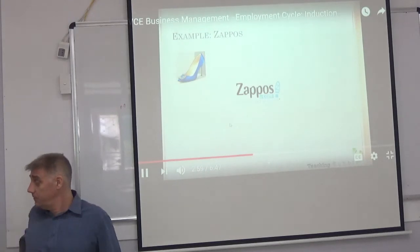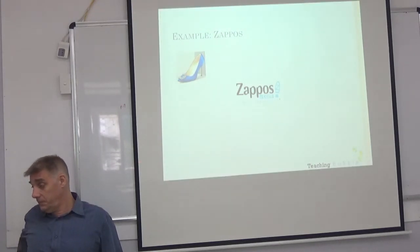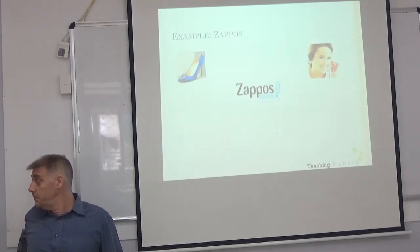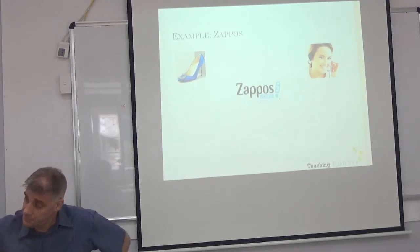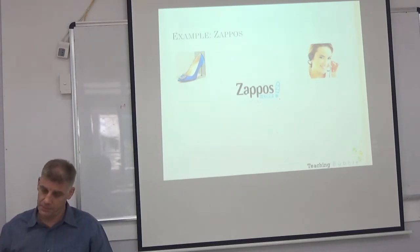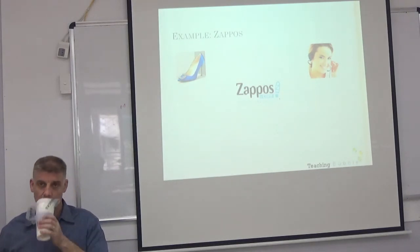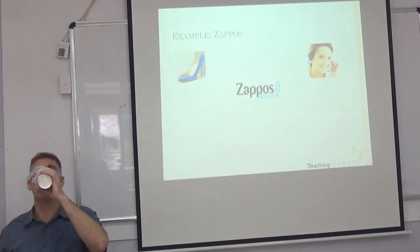First of all, Zappos sells shoes — they initially started just by selling shoes online, so they're an online business. Their main focus, as you can see at the bottom, is customer service — powered by service — which can be quite difficult with an online business. They don't have stores where they can interact with staff, so they rely heavily on a call centre to provide their service.